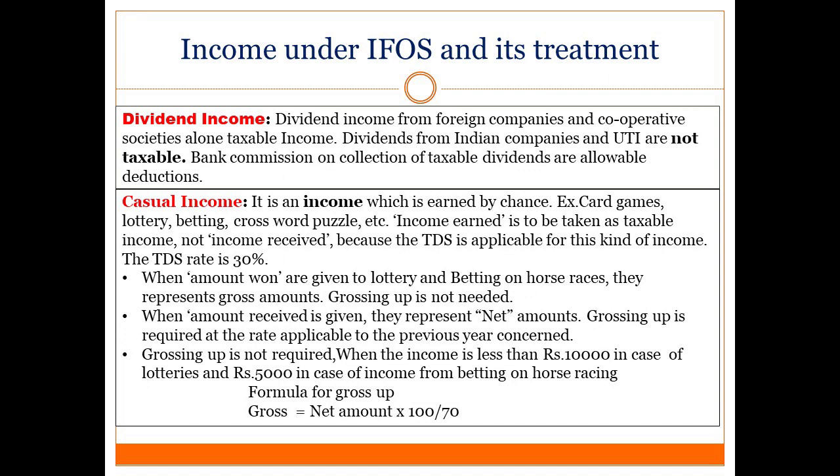Income under IFOS and its treatment. First: Dividend Income. Any dividend income received by an assessee is taxable under the head IFOS. However, the dividend received from a foreign company and cooperative societies alone are taxable income. Any dividend received from an Indian company or from units of UTI are not taxable — they are completely exempted. Bank commission on collection of taxable dividend is an allowable deduction.